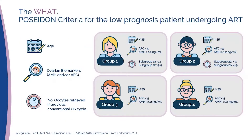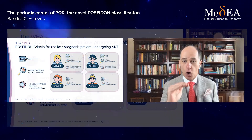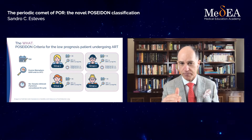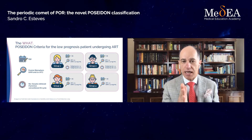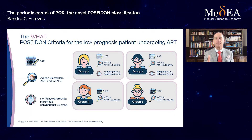Patients are classified according to their prognosis of reproductive success in ART. Here is an illustration to help you understand. In Poseidon, we have four groups of low prognosis patients. Groups one and three are patients younger than 35 years old. Group one represents patients with adequate ovarian markers who, after conventional ovarian stimulation, end up with low — less than four — or suboptimal — between four and nine — oocytes retrieved. Group three represents patients younger than 35 whose ovarian markers are already low.